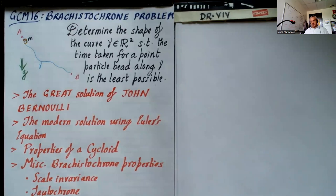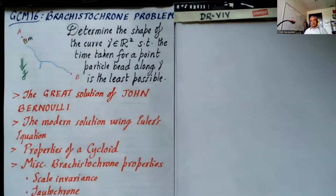It roughly translates into finding the shape of a curve that has a least-time property. The way I like to set up this problem — because I don't want to worry about a particle leaving the track due to high curvature — is to imagine a bead constrained to move in a wire between points A and B. You're free to shape the wire any way you want, and there's a constant gravitational field downwards. Determine the shape of the curve gamma in two dimensions such that the time taken for a bead sliding along gamma is the least possible.